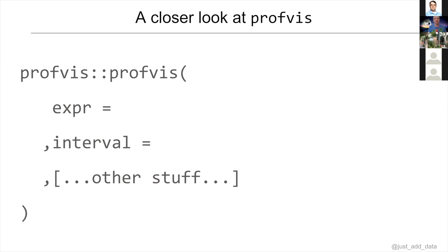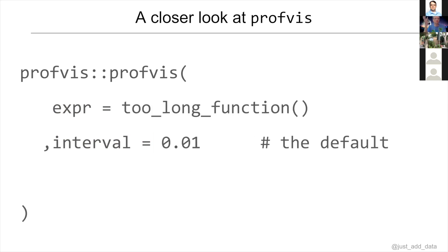You use this function by giving the expression argument a function that you wrote — just a function that's running too long. The default for the sampling interval is one one-hundredth of a second, which works pretty well, so normally you wouldn't have to change this. Every one one-hundredth of a second R is examining your call stack, seeing which function is being executed and how much memory is being used — that's really all it takes.